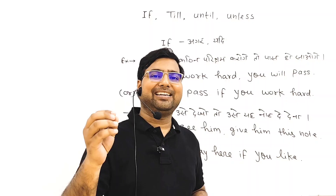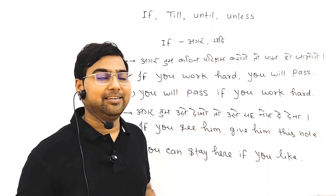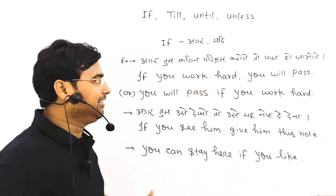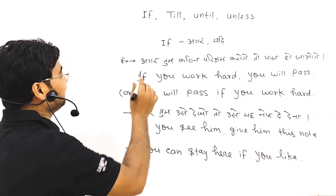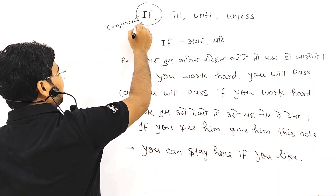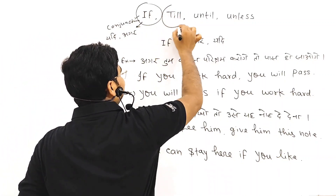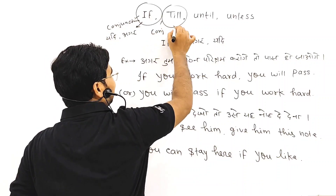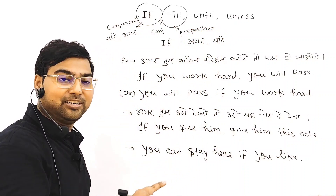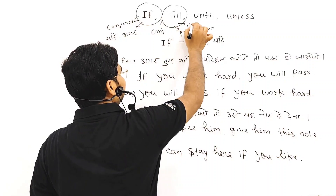Good morning class. We are studying subordinating conjunctions today — if, till, until, and unless. If is a subordinating conjunction, jiska matlab hota hai 'yadi' or 'agar.' Till is both a conjunction and a preposition. Till ka Hindi arth hota hai 'tak' or 'jab tak.' Till is used very frequently in the language and has many factors we will discuss.